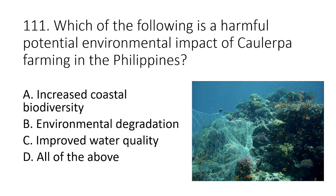Question 111. Which of the following is a harmful potential environmental impact of Caulerpa farming in the Philippines? A. Increased coastal biodiversity B. Environmental degradation C. Improved water quality D. All of the above. The answer is B. Environmental degradation. The nets used by farmers to enclose their farms when left unattended can drift into corals, causing damage and trapping marine life.